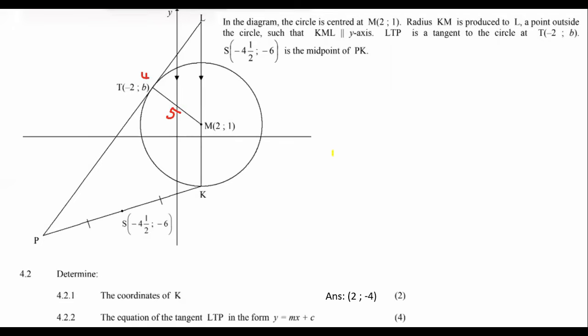Let's move on. Here's the next question. So it says, determine the coordinates of K, and this is only for two marks. So it's got to be something quick or relatively quick.